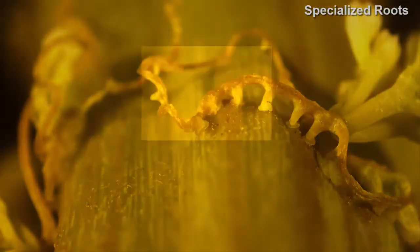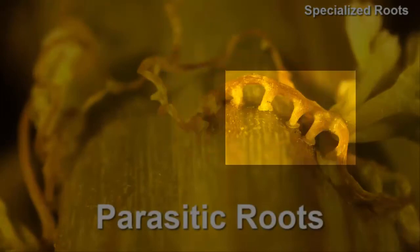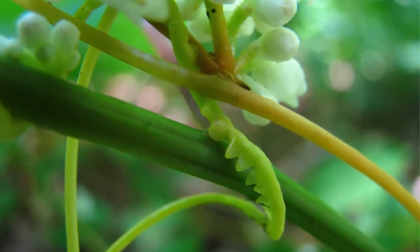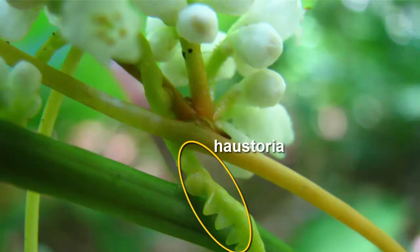There are also roots that parasitize other plants using modified surface projections called haustoria that develop from the stem. Plants harboring these structures, however, can still make their own food by photosynthesis. Thus, they are not really obligate parasites.